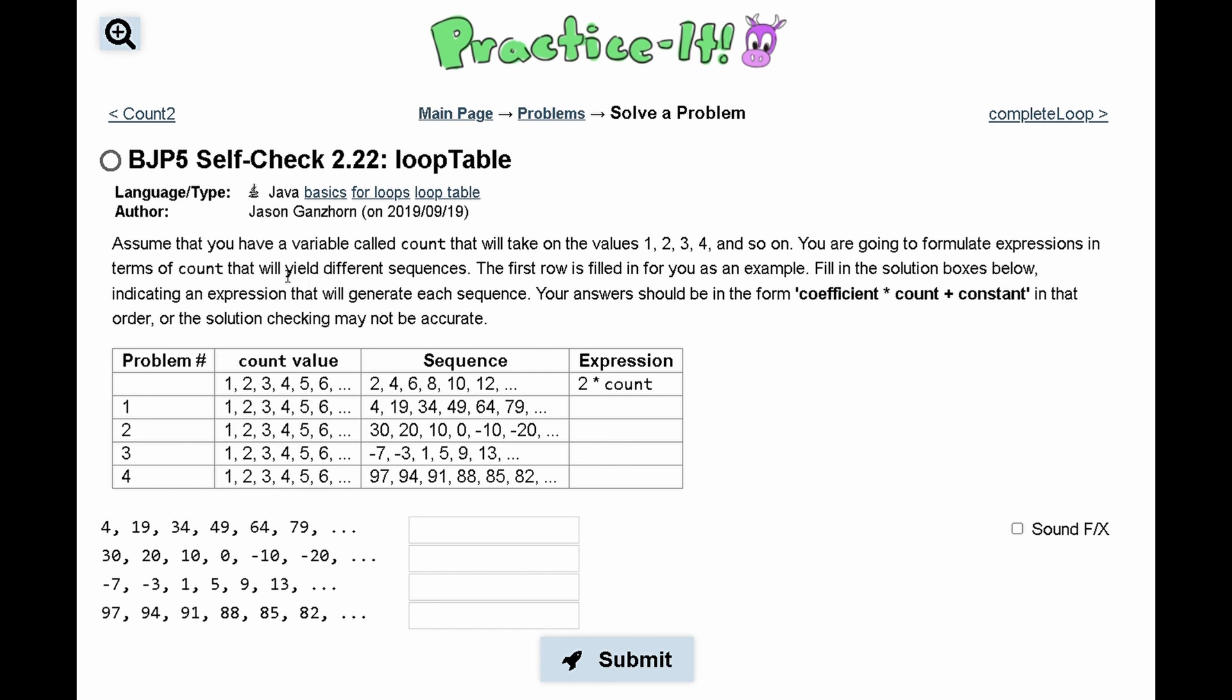We are to assume that we have a variable called count that will take on the values 1, 2, 3, and so on. We are going to formulate expressions in terms of count that will yield different sequences. This first row is given as an example, so basically we are given 1, 2, 3, 4, 5, 6, and our expression is 2 times count, and that gives us this sequence. So now we need to do the same for all of these other values.